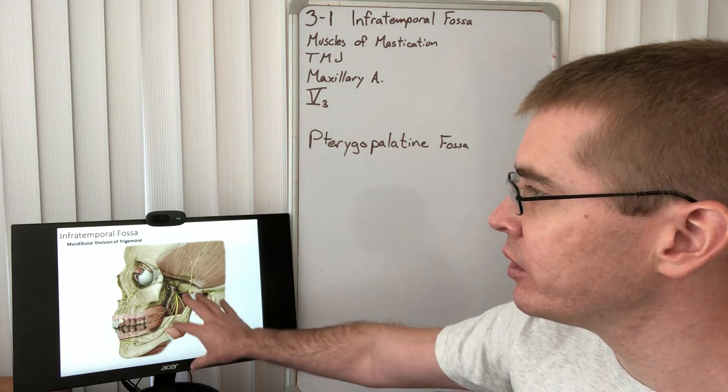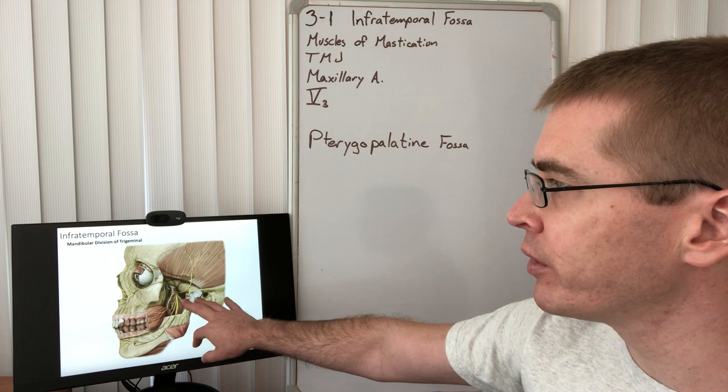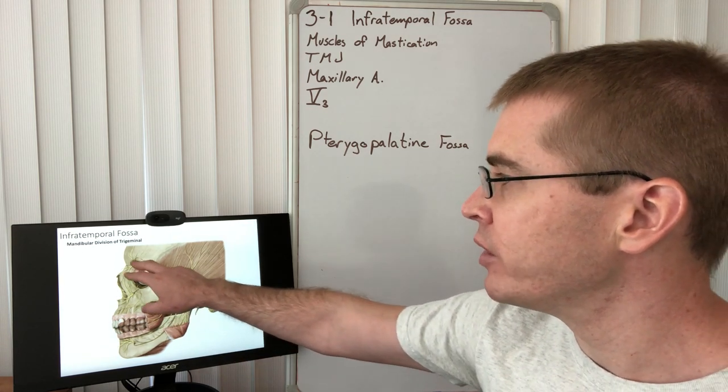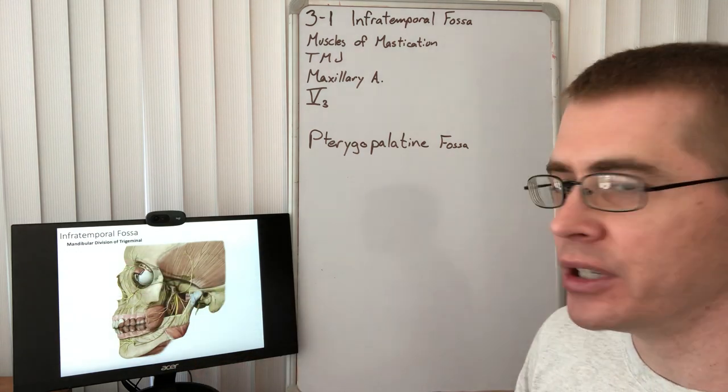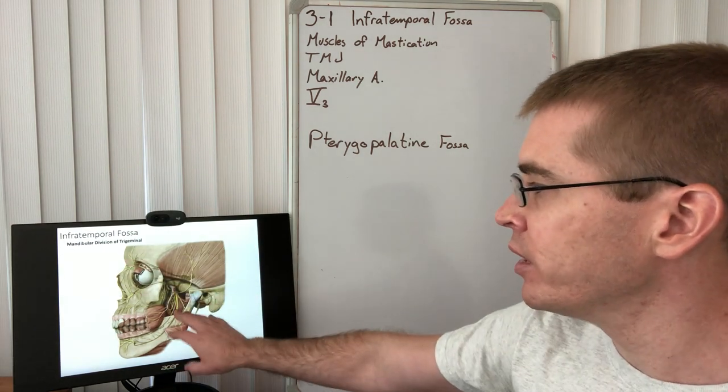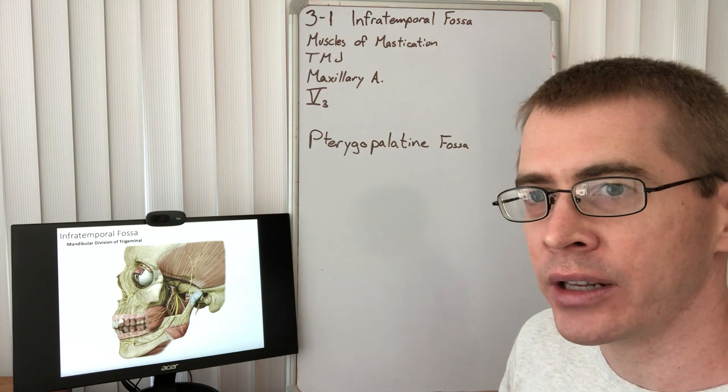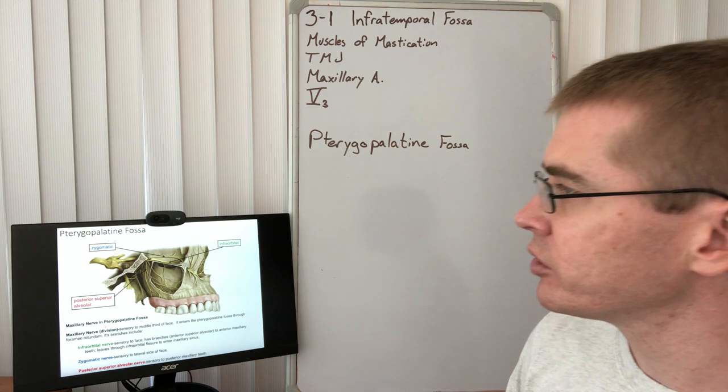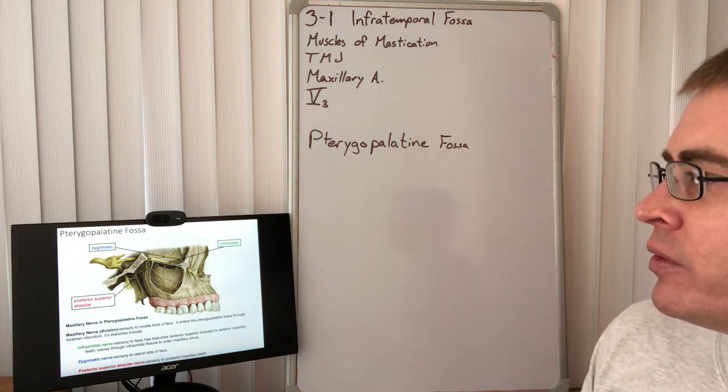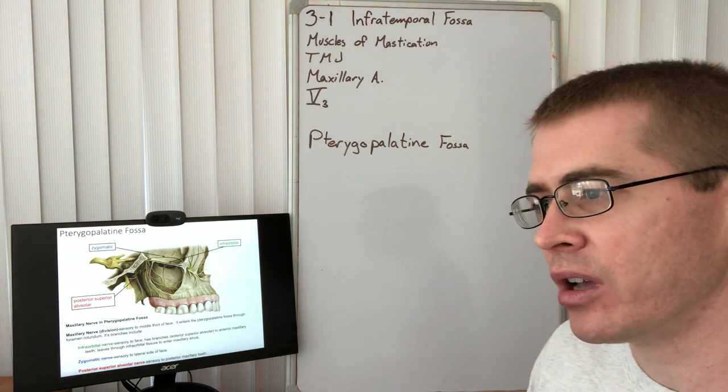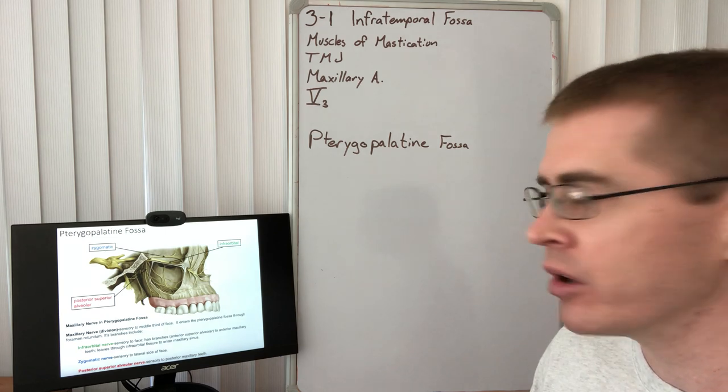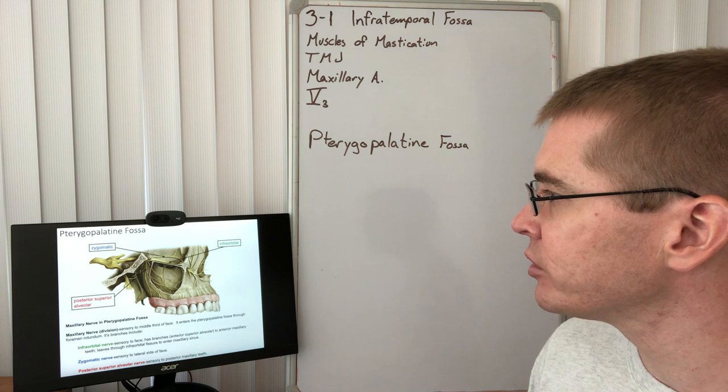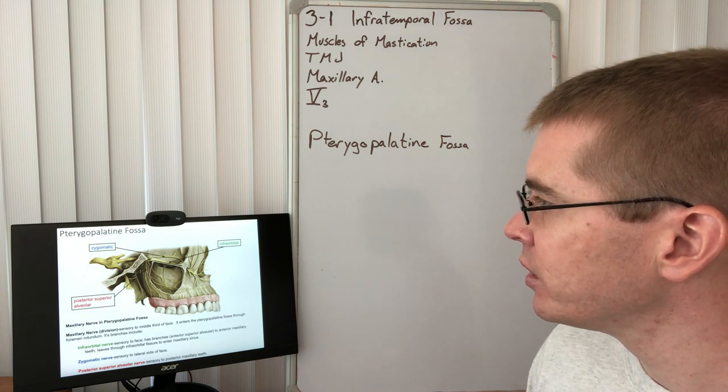So here again we see those portions of the trigeminal nerve, V3, V2, and V1 all ghosted into this image. Here we're showing the depth of that infratemporal fossa. So just a quick review of all of these branches of the trigeminal nerves. Take a look at those and understand what they're supplying.